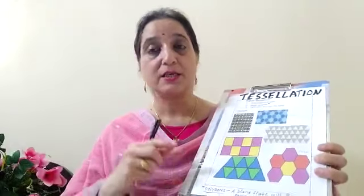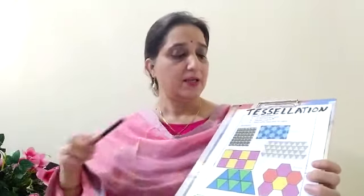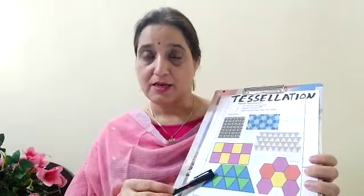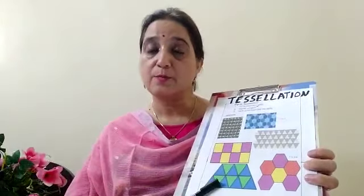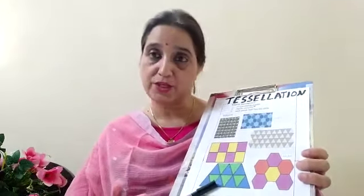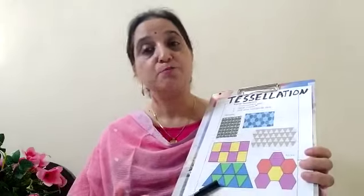From lesson number one, Shapes Around Us, we have covered almost all the topics through videos. Only one topic is left — that is tessellation — and I am going to briefly explain it in this video. Tessellation is a design and it is made up of 2D shapes, meaning plain shapes.